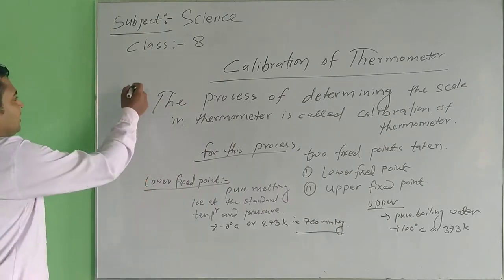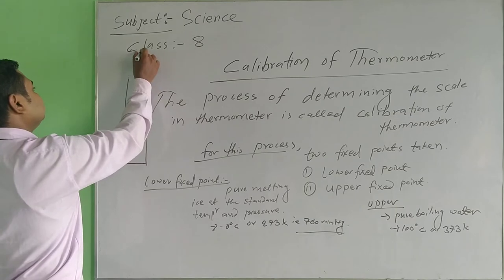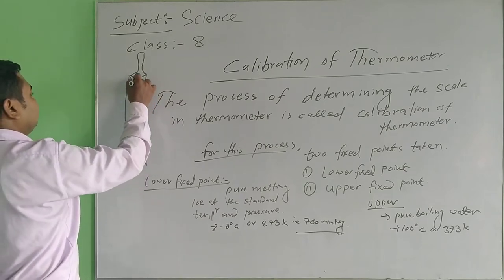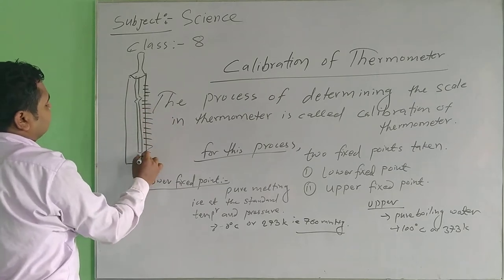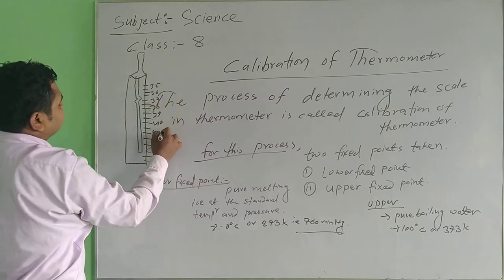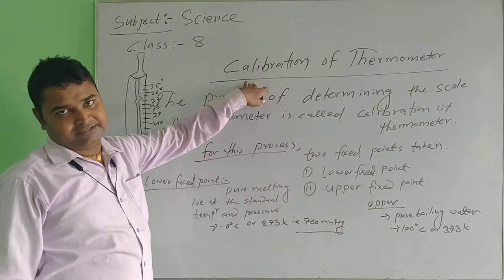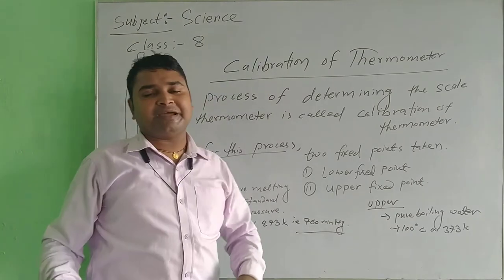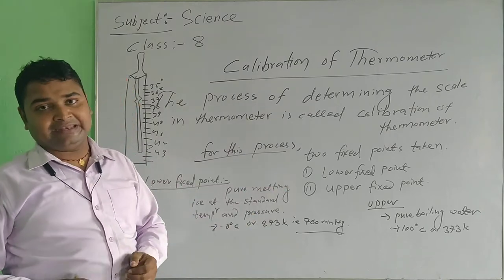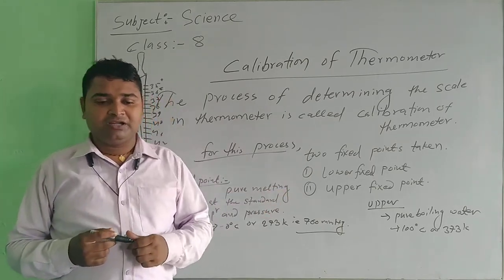You have seen the scaling in the thermometer — 35, 36, 37, 38, 39, 40, 41, 42 — that is what is done by the calibration of thermometer. So calibration of thermometer means the process of determining the scales in the thermometer. In this process, two points are taken while calibrating the thermometer: the first one is the lower fixed point and another is the upper fixed point.